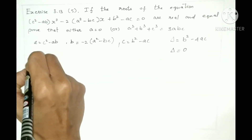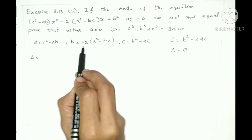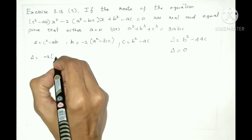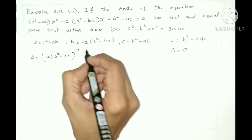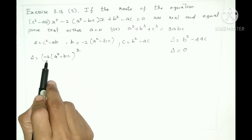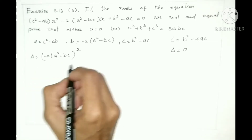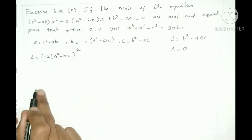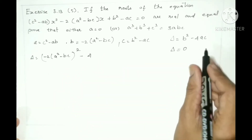Now substitute these values into the formula delta equals b squared minus 4ac. So b squared means we take the B term — which is minus 2 into a squared minus bc — and square the whole thing. We take minus 2 out and square a squared minus bc.